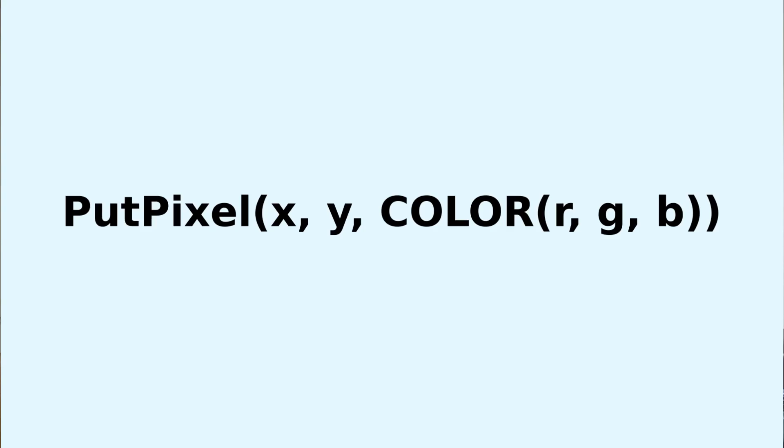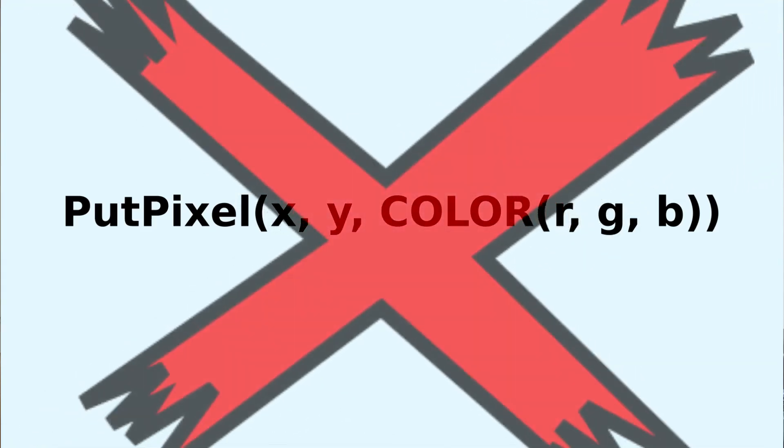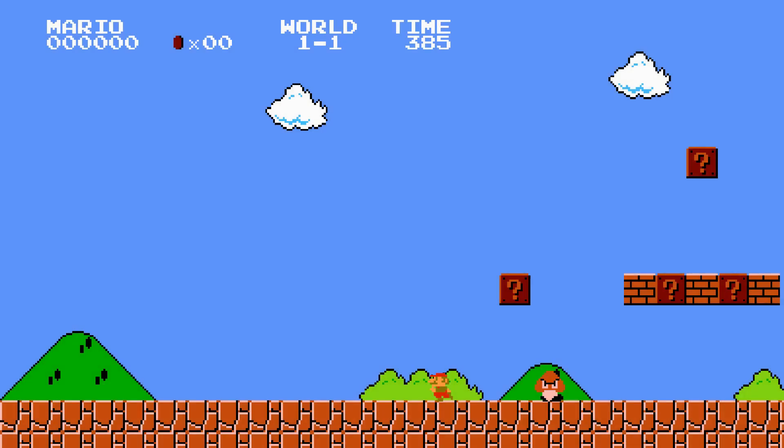Similarly to the 2600, the NES is also somewhat constrained and doesn't give you full freedom to do whatever you want. At least thanks to the video memory you don't necessarily need to track every scanline of your TV like on the 2600. But still, you can't draw individual pixels of a specified color at an XY coordinate — all you can draw is 8x8 pixel tiles from the CHR ROM. The system has two fixed constructs: the character sprites and the background.